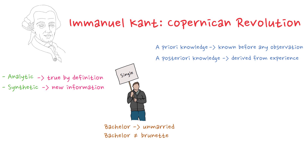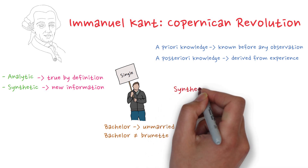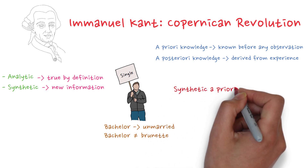Meanwhile, 'This bachelor is brunette' is both synthetic and a posteriori, because it gives us new information but requires observation. Kant also argued that there is a third type of knowledge: synthetic a priori statements.